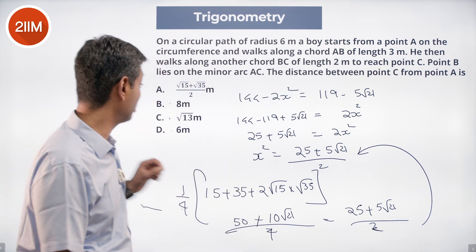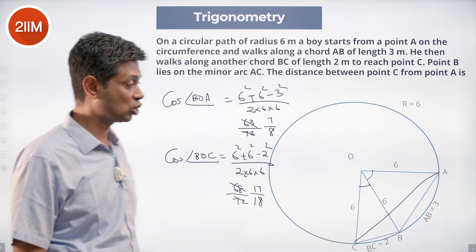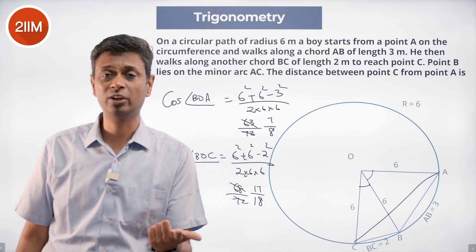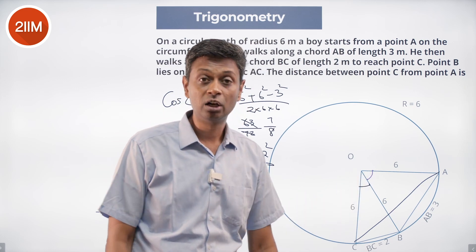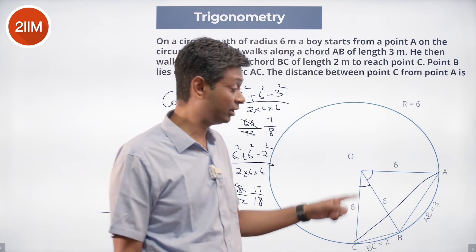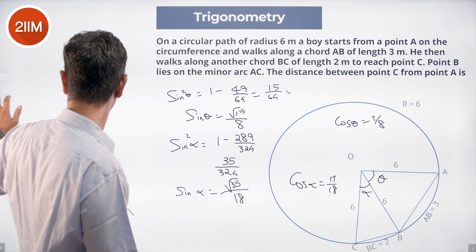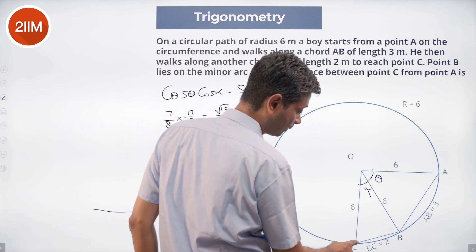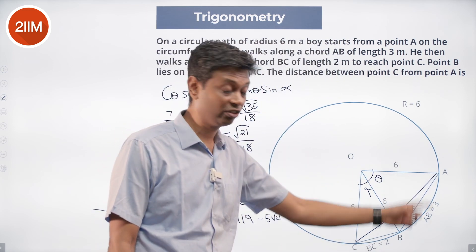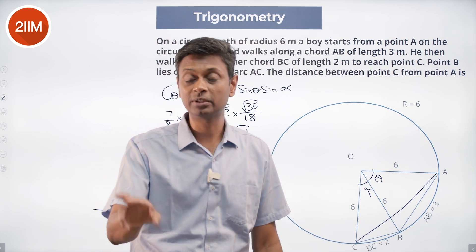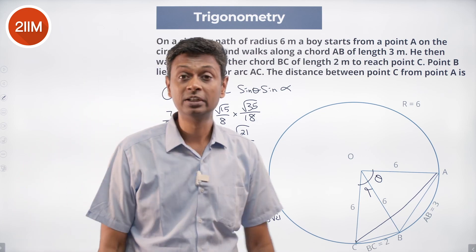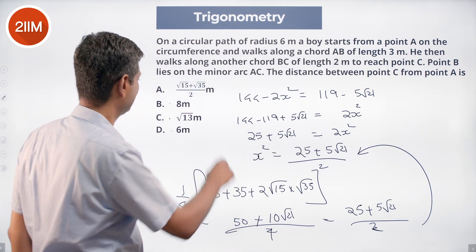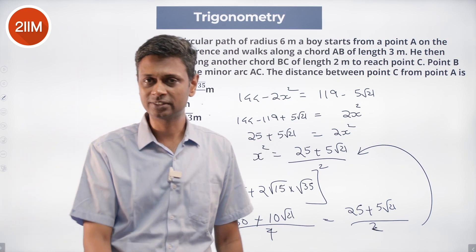Proper pain in the neck, but we got there. Our approach: we look at this question and say it's time-consuming. We know three sides of a triangle, so we find cos of angle AOB and cos of angle BOC. We know the cosine, so we find the sine. This is pure positive territory — nothing to worry about. We find sin θ, sin α, then cos(θ + α). That gives us the angle AOC. We introduce AC, set up the cosine rule for triangle AOC, equate, and find AC square. It turns out AC square is (25 + 5√21)/2, so AC = (√15 + √35)/2. That's our answer. Super tough question.